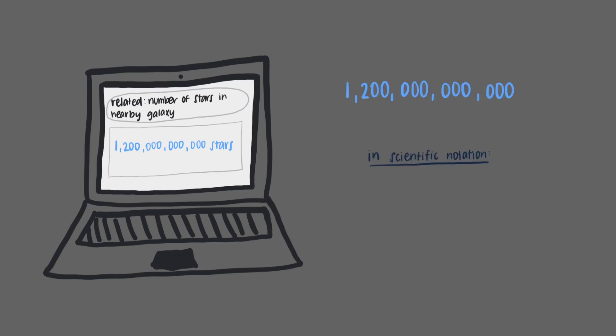That's right, 1.2 trillion written in scientific notation is 1.2 times 10 to the 12th power. We start with the decimal at the very end of the number and move it until it is between the 1 and the 2. If we count how many times we move the decimal point, we get 12, which means that we're multiplying 1.2 by 10 to the 12th power.